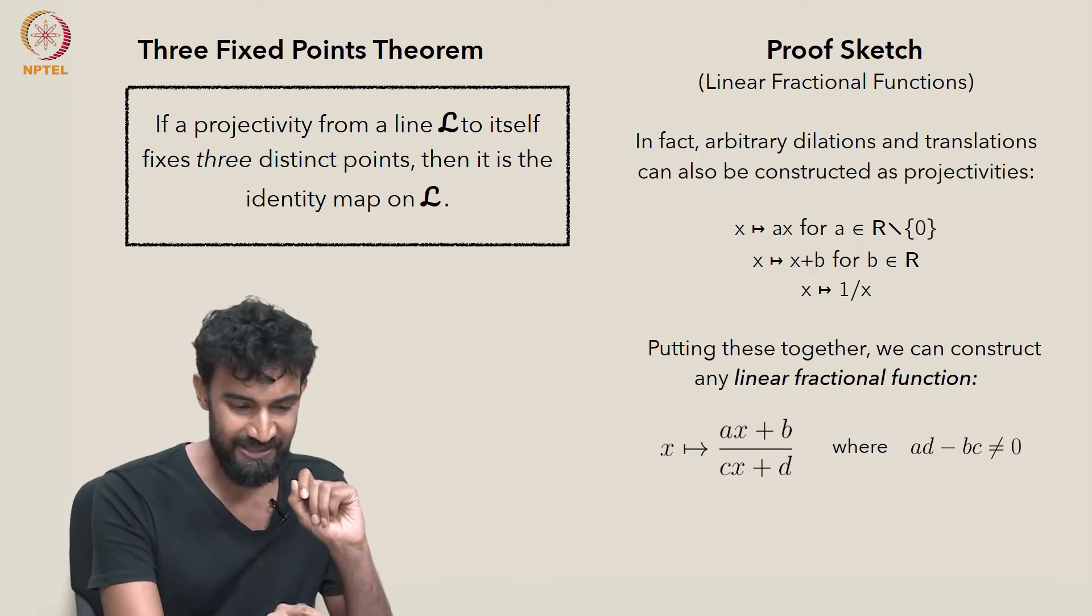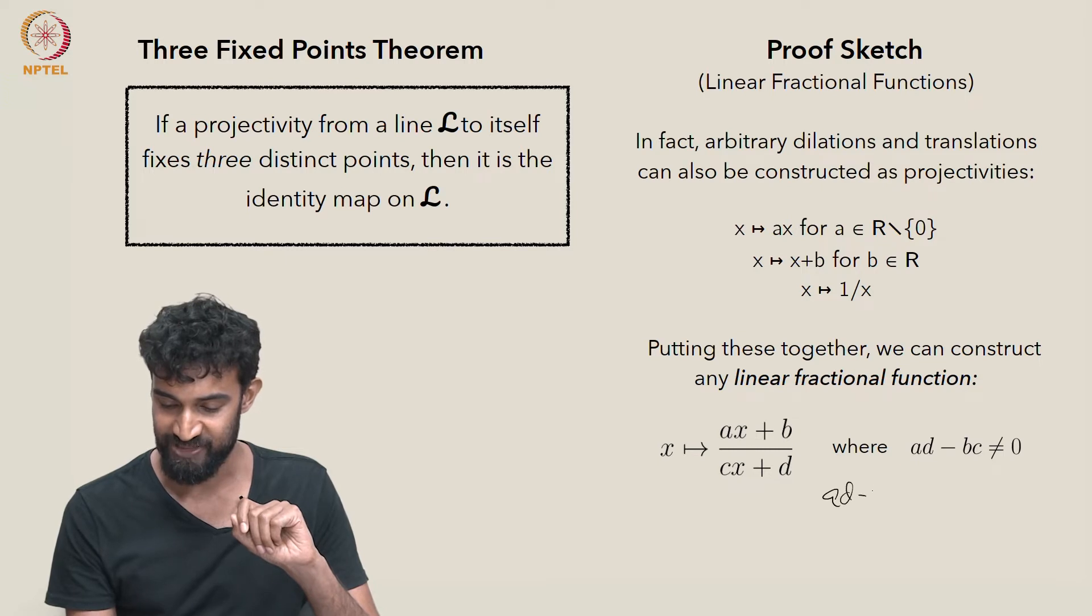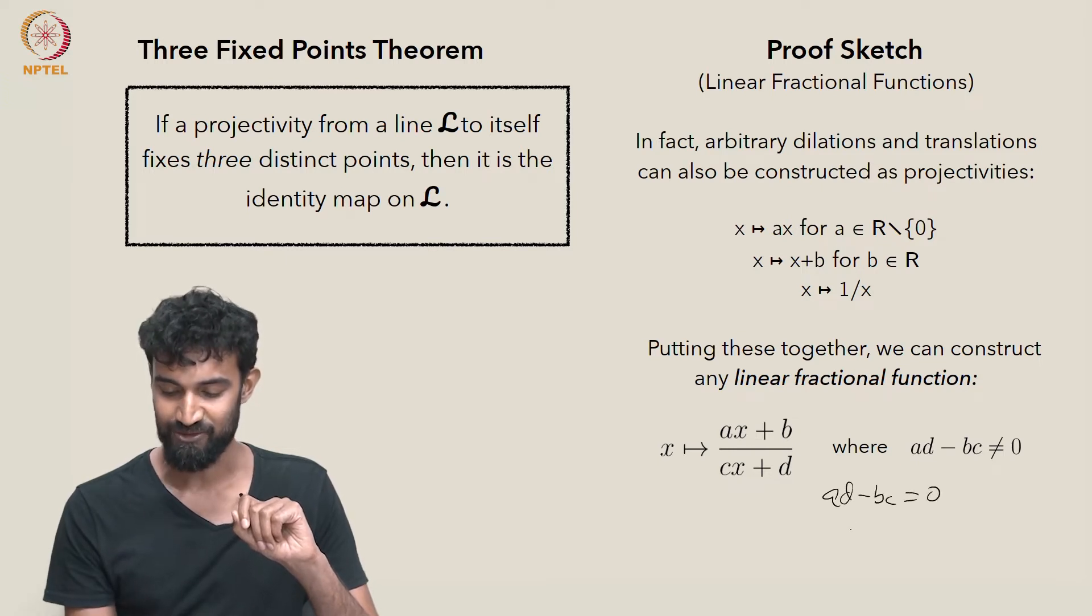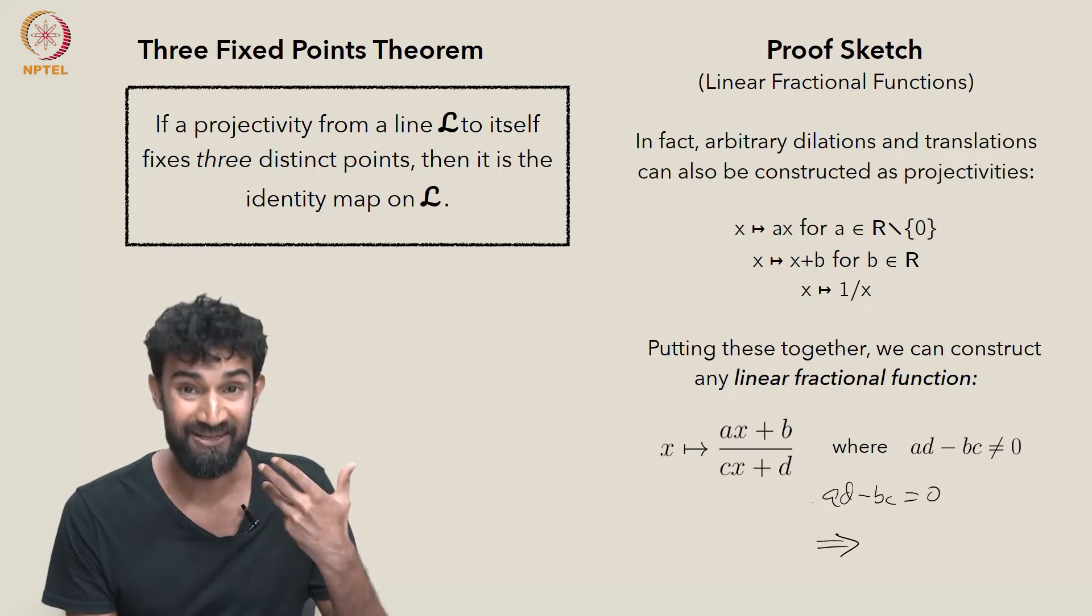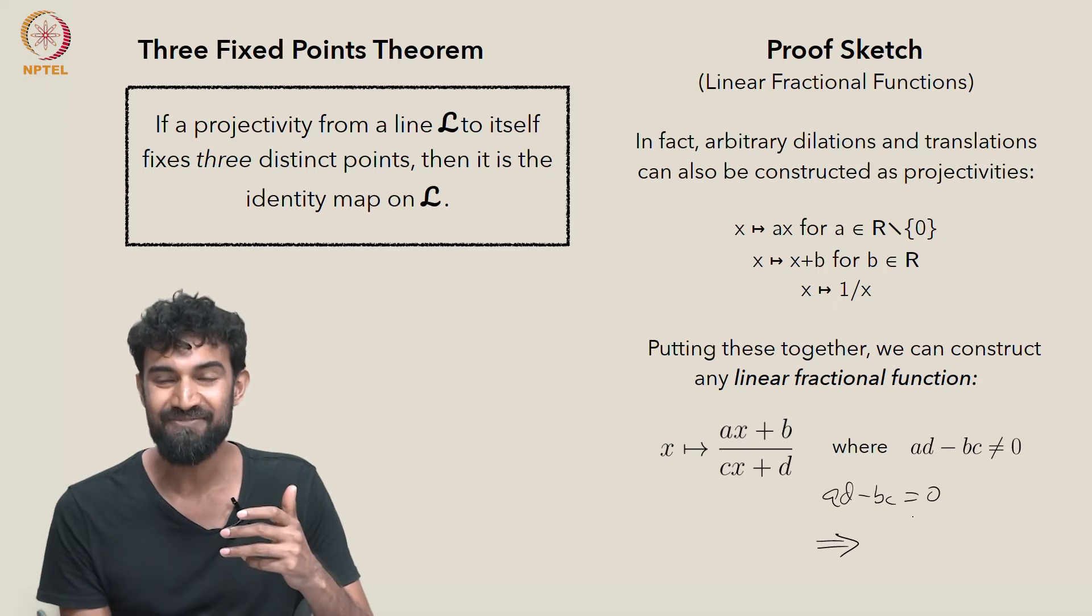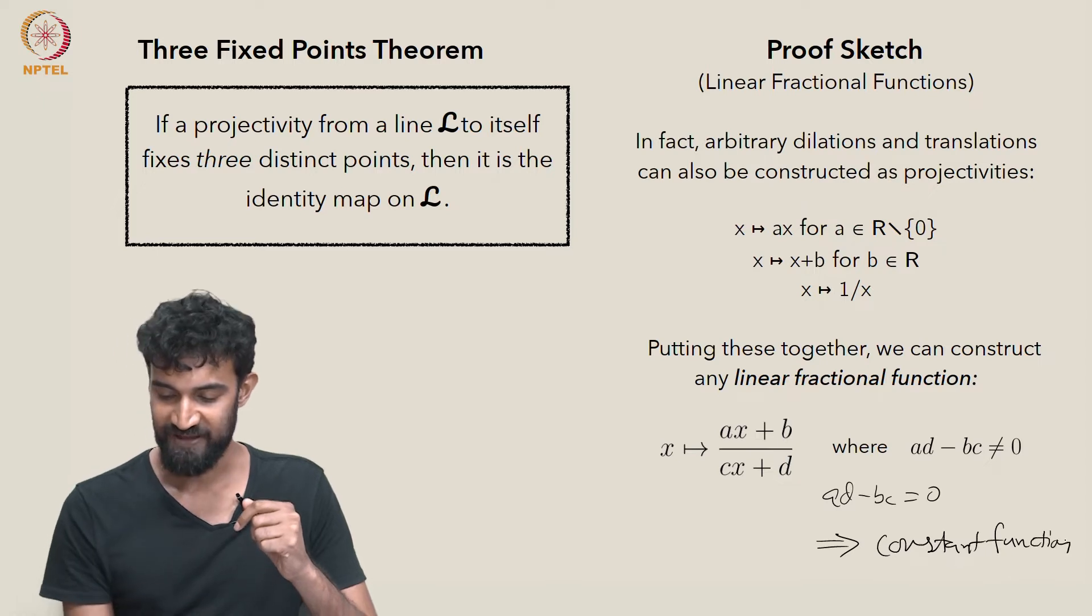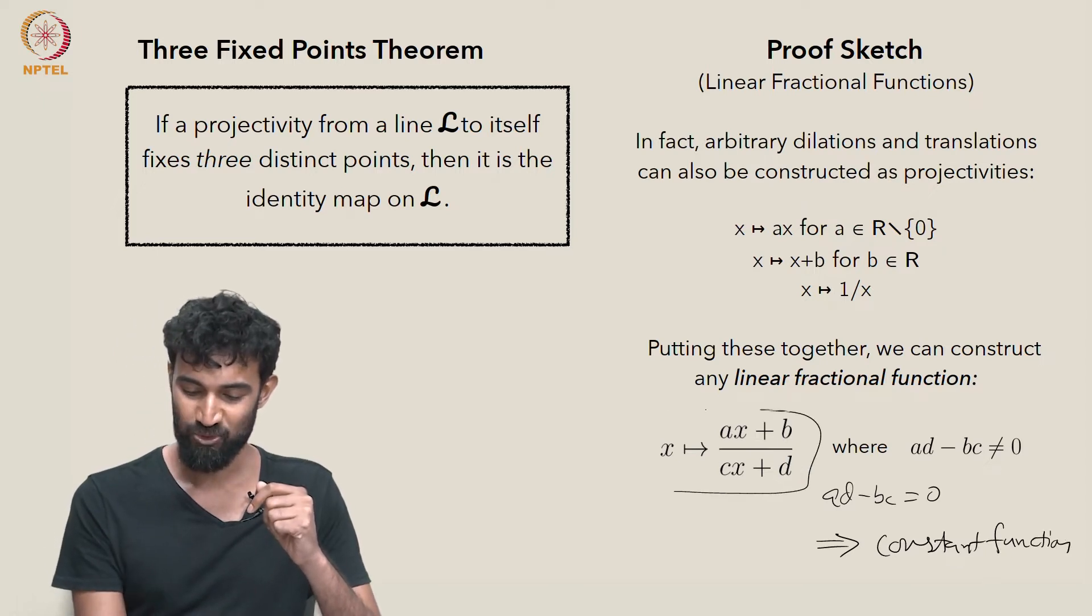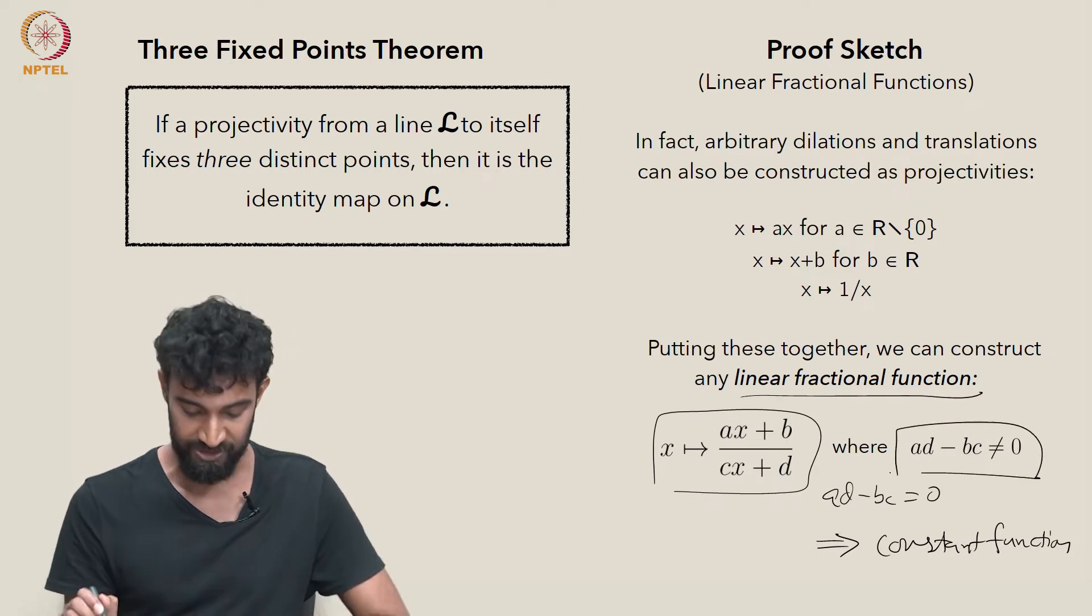The reason we need that is because if ad - bc equals zero, then this function is going to be a constant function. I'll leave that as an exercise for you to check. If ad - bc equals zero, this won't be very interesting. So for it to be a linear fractional function, this has to be non-zero.